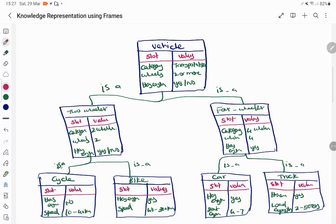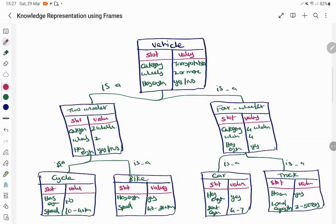Here is an example for a vehicle system. The root node or parental node is vehicle. Slots consist of attributes like category (transportation), number of wheels (2 or more), and whether it has an engine (some may have, some may not). There are two types of vehicles: two-wheeler and four-wheeler.